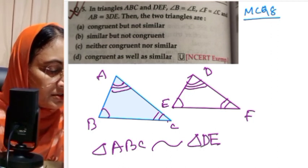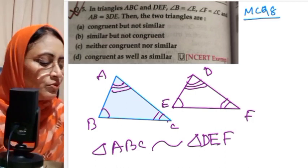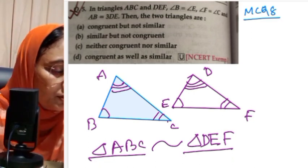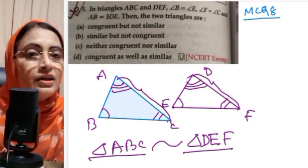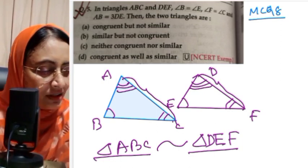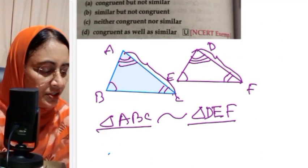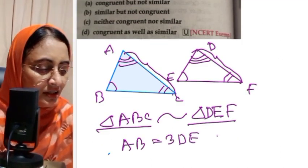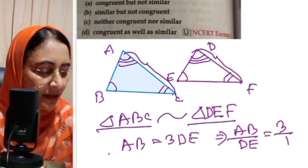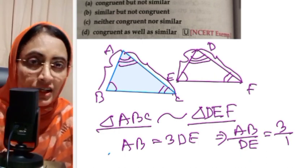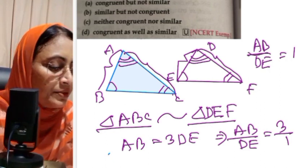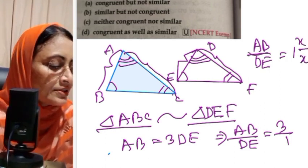Triangle ABC is similar to triangle DEF. However, we are also told that AB equals 3DE, which means AB/DE equals 3/1 — the sides are proportional but not equal (ratio is not 1). So the triangles are similar but not congruent. The correct option is B.